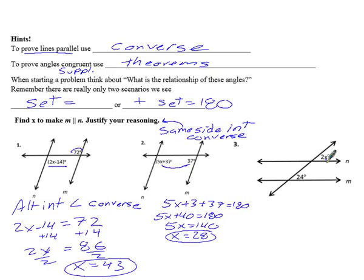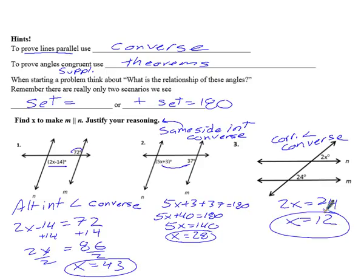And then the last one here, what is the relationship? The relationship is that those are corresponding angles. And so I'm going to use the corresponding angle converse. Corresponding angles are when we set them equal to each other. Hey, this one's easy. Divide by 2, done.